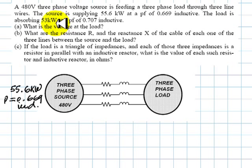The load is absorbing 53 kilowatts at a power factor of 0.707 inductive. The total three-phase power absorbed by the load is 53 kilowatts at a power factor of 0.707 inductive or lagging. The first question is: what is the voltage at the load? We know that the voltage here, the line-to-line voltage, is 480. What is this voltage here? What is the voltage at the load?